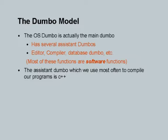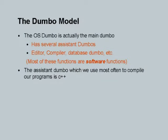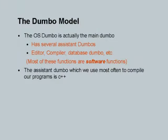Eventually we will look at the computers in detail including the hardware, memory, and disk. But for the time being this abstraction is good enough. The OS Dumbo is actually the main Dumbo. There are several assistant Dumbos — variously called editor Dumbo, compiler Dumbo, database Dumbo. Amongst compiler Dumbos we have seen C++ Dumbo, but there could also be a Fortran Dumbo, C Dumbo, and others. Most of these functions are called software functions because they are programs written by other people and made available to us as part of the entire computer abstraction.